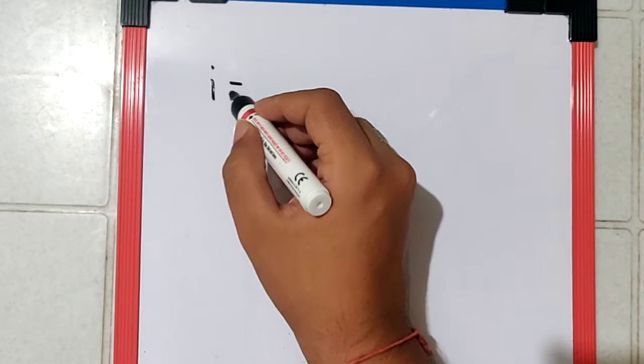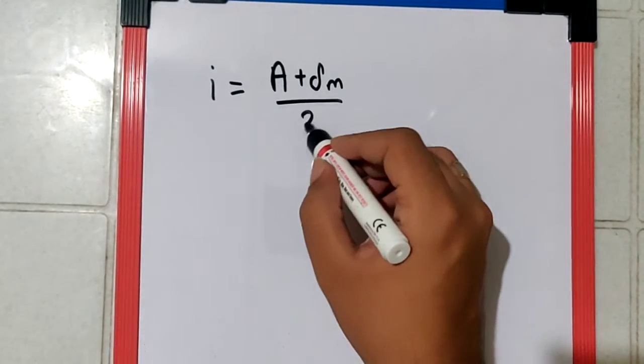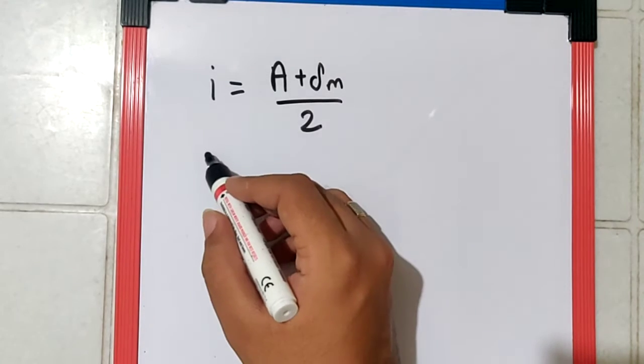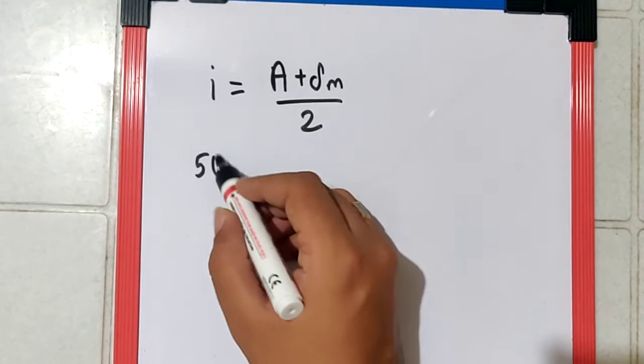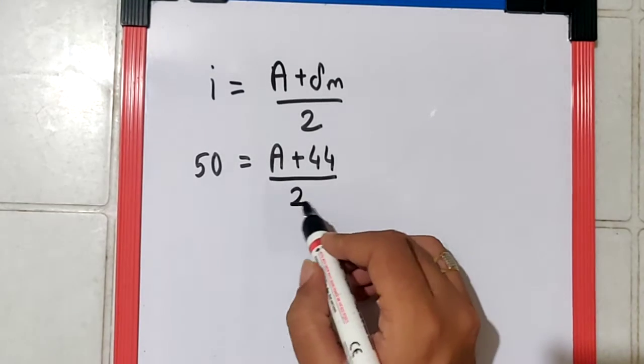Now we know when there is minimum deviation, I equals A plus delta M by 2. We are given I as 50 degrees, A is what we're supposed to find, and delta M is 44 degrees, the whole upon 2.